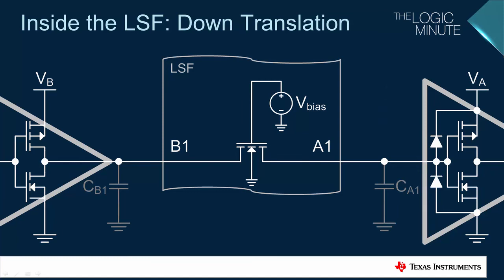Recall that CB1 and CA1 are parasitic capacitances, and are shown here only as a reminder. This is the simplest application of the LSF series of translators, with no external components being required. This arrangement can be used when down-translating from a push-pull output to a low-leakage input.